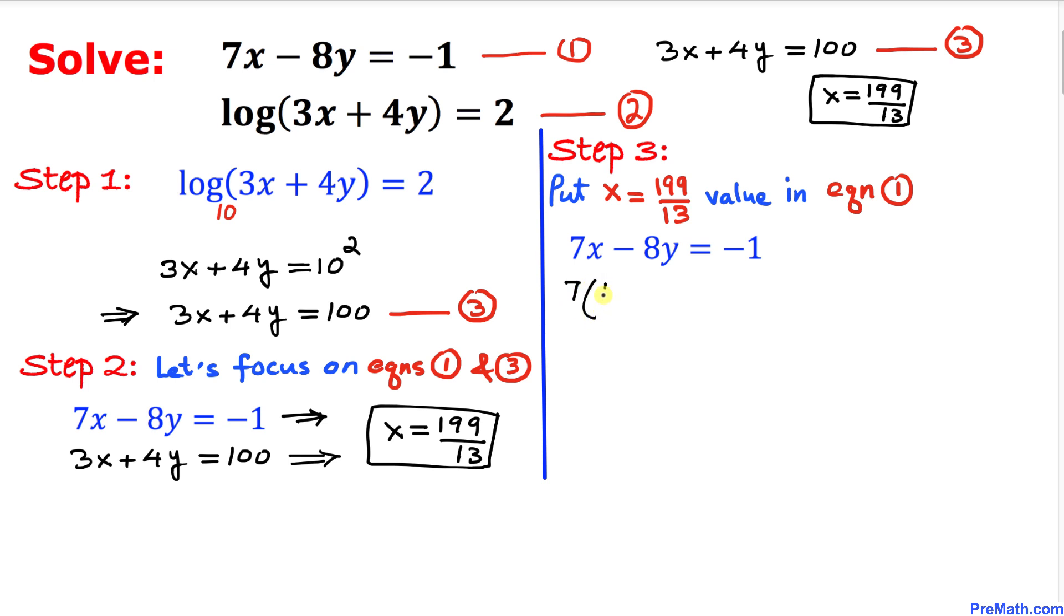Let's substitute the x value. So this becomes 7 times 199 divided by 13 minus 8y equals negative 1. On the left-hand side, when we multiply, we are going to get 1393 divided by 13.